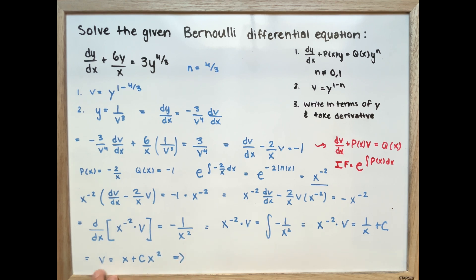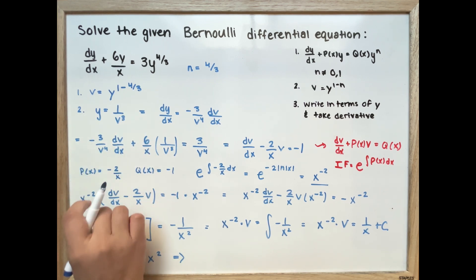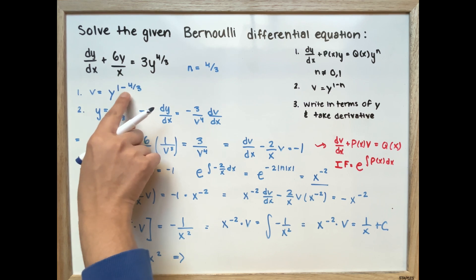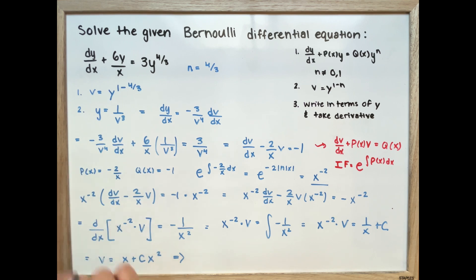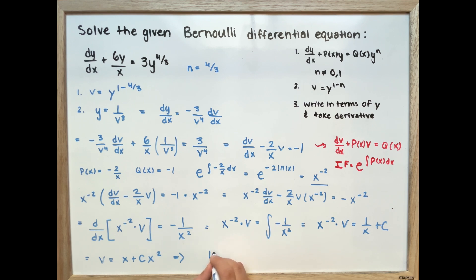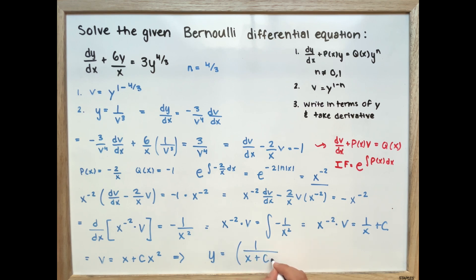Now we substitute v back. Since v equals y to the power of negative 1 over 3, we have y to the negative 1 third equals x plus c times x squared. Therefore, y equals 1 over the quantity x plus c times x squared, all cubed. That is our final answer.